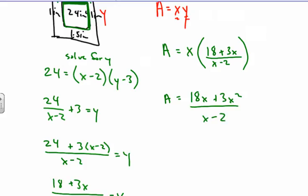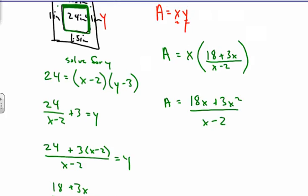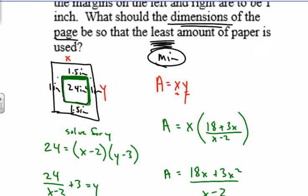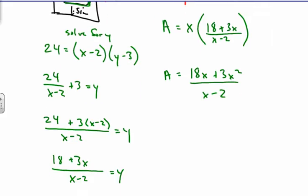From here, what we want to do is we want to find out what is our derivative. So, once again, we're looking for the minimum, the least amount of paper. So we're looking for a minimum. So we're going to find the area. We have to use the quotient rule. So we're going to find our critical points by finding the derivative and setting that equal to 0 to figure out our critical points.